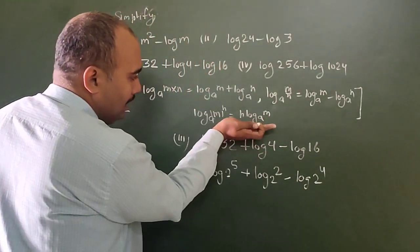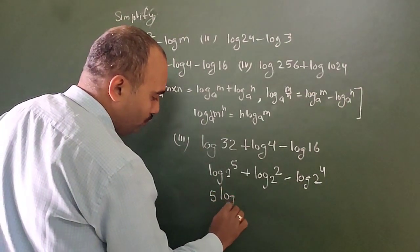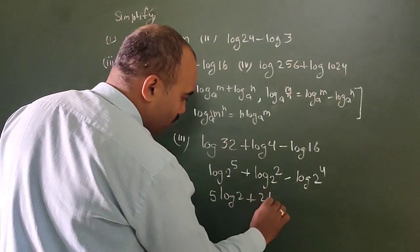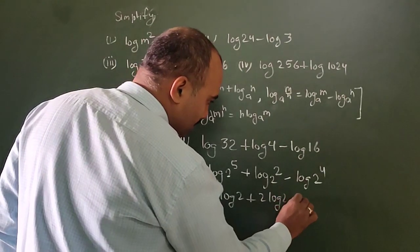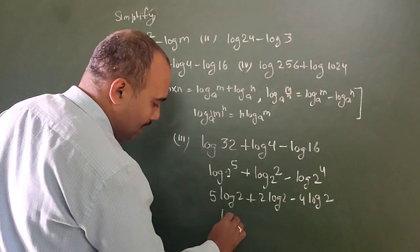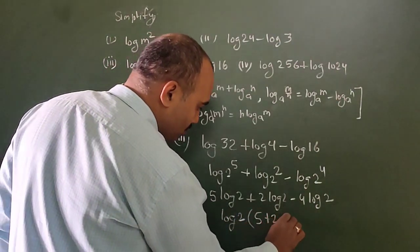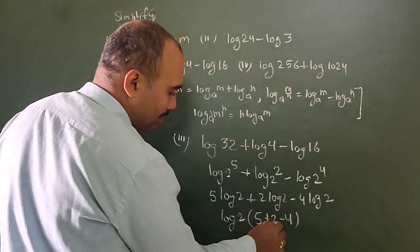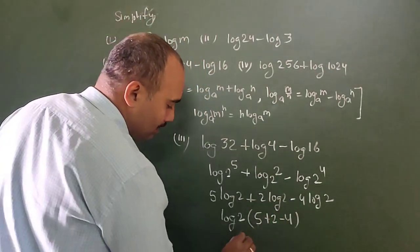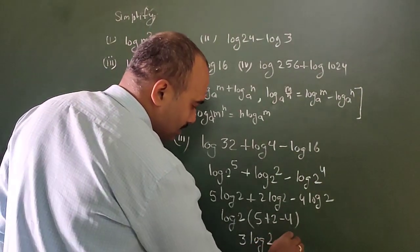If we apply the power formula, the power comes out front. This becomes 5 log 2, this becomes 2 log 2, and this becomes 4 log 2. Okay, log 2 is in all terms, so take log 2 common. 5 plus 2 minus 4: 5 plus 2 is 7, 7 minus 4 is 3. So you get 3 log 2 as your answer here.